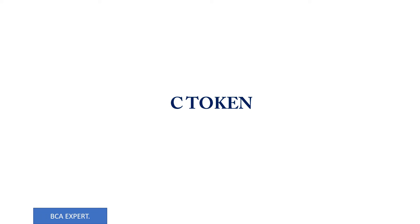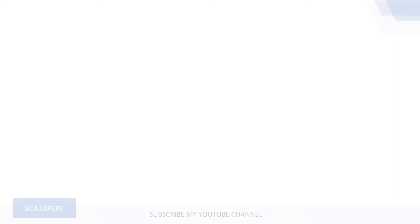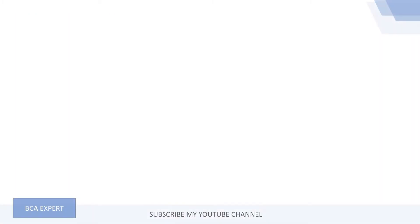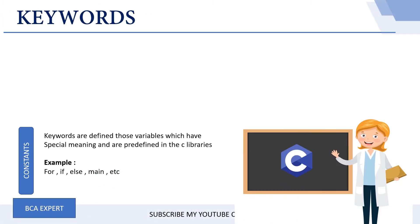In this tutorial we shall discuss about C tokens. The C tokens available in C programming language are keywords, constants, special symbols, strings, identifiers, and operators. Now we shall discuss about each one of them in detail.